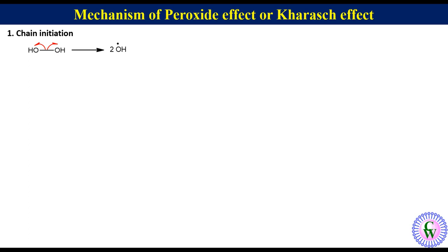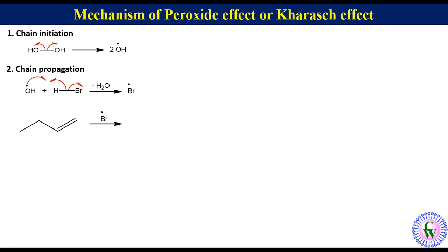Step 2: Chain propagation. The radical produced in the initiation step reacts with HBr and abstracts the hydrogen atom from HBr to produce water and a bromine free radical. Now the alkene reacts with the bromine free radical. The bromine radical can attack the alkenic carbon with more number of hydrogen to produce a secondary alkyl free radical, or it can also attack the carbon with less number of hydrogen to produce a primary alkyl free radical.